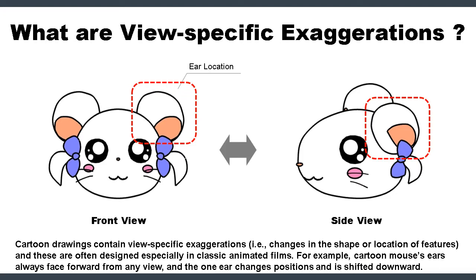For example, cartoon mouse's ears always face forward from any view, and the one ear changes positions and is shifted downward.